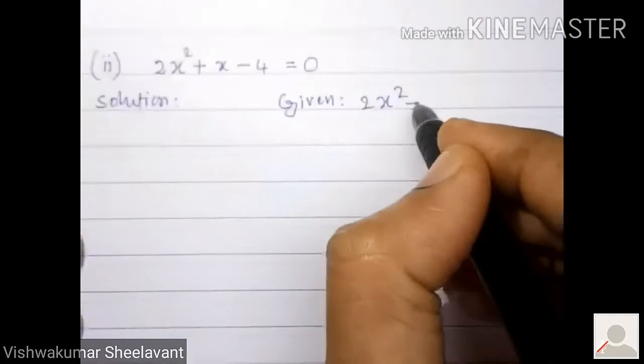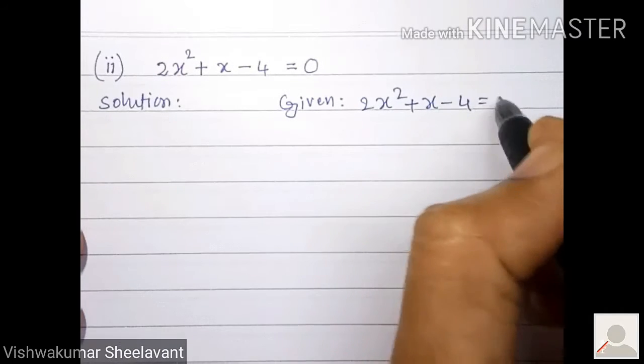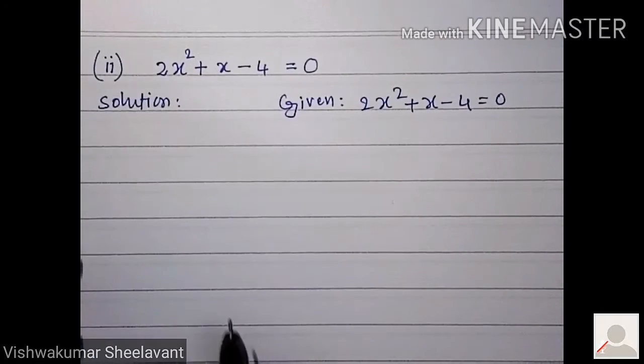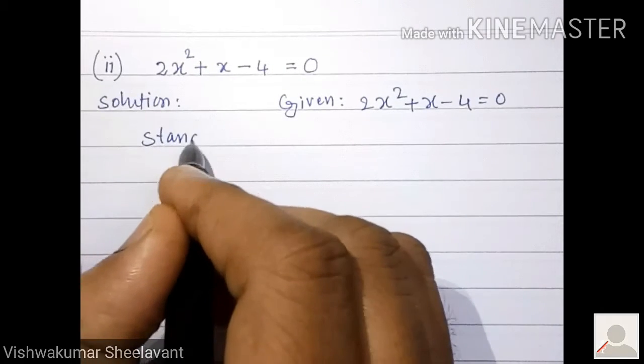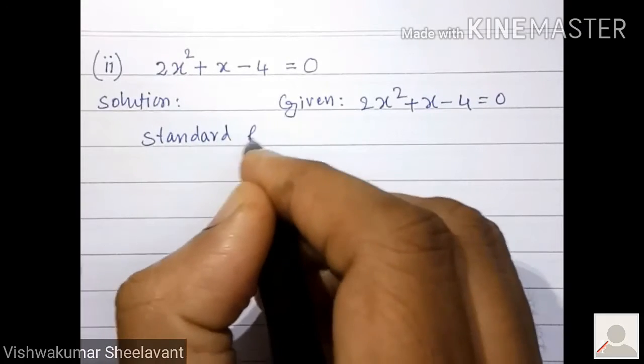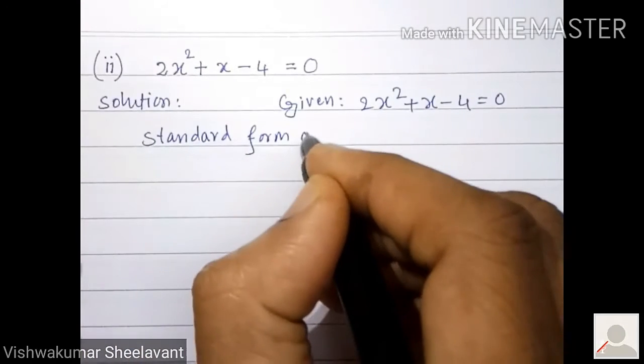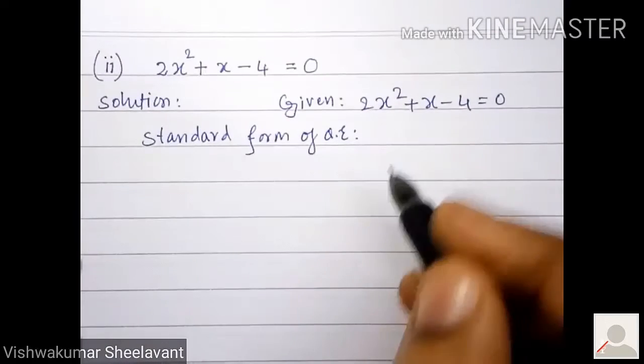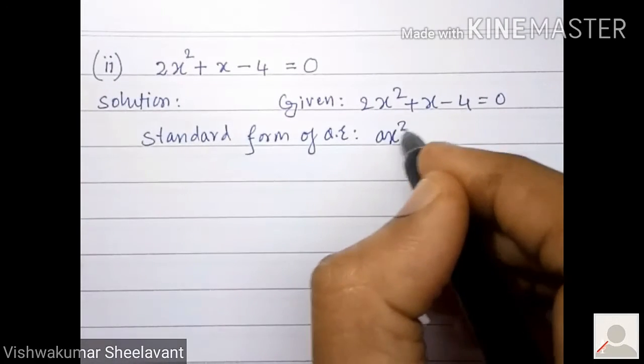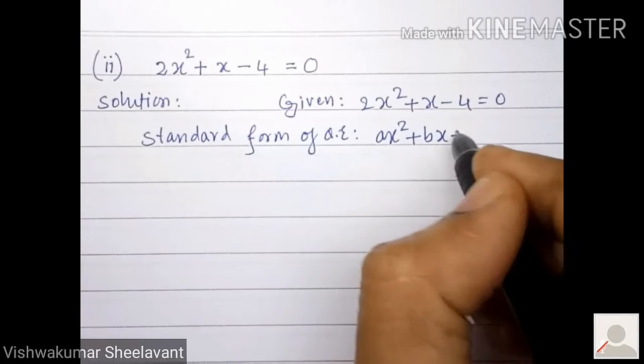Given 2x square plus x minus 4 equal to 0, the standard form of a quadratic equation is ax square plus bx plus c equal to 0.